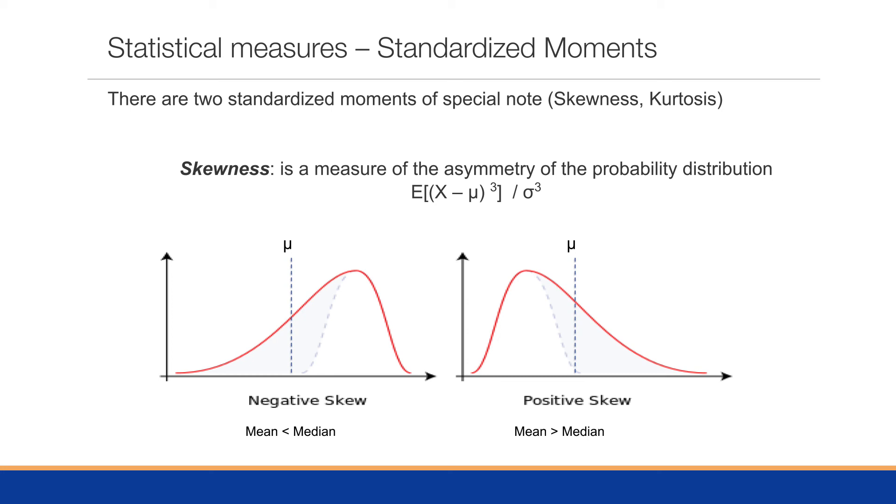If we have a negative skew, that means the tail is on the left side; we have our mean is less than our median. And if we have a positive skew where the tail is on the right side, our mean will be greater than the median. So it tells us kind of how the bell kind of leans—does it lean to the left or does it lean to the right?